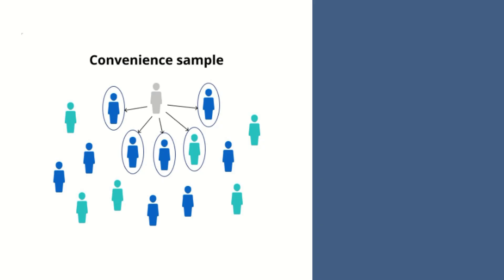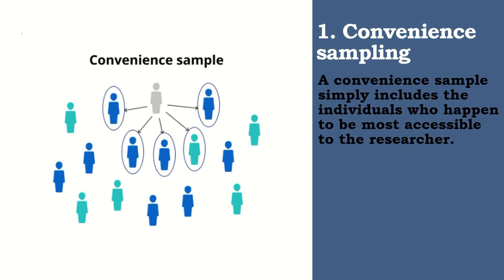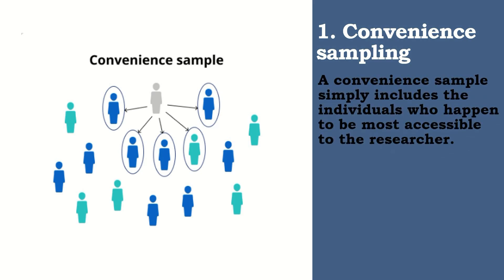The first type of non-probability sampling is called convenient sampling. When we say convenient sampling, it simply includes the individuals who happen to be most accessible to the researcher. Kung sino yung mas accessible, kung sino yung nandyan, that's who you'll choose. Halimbawa, you are researching opinions about student support services in your school. After each of your classes, you will ask your fellow students to complete a survey on the topic.